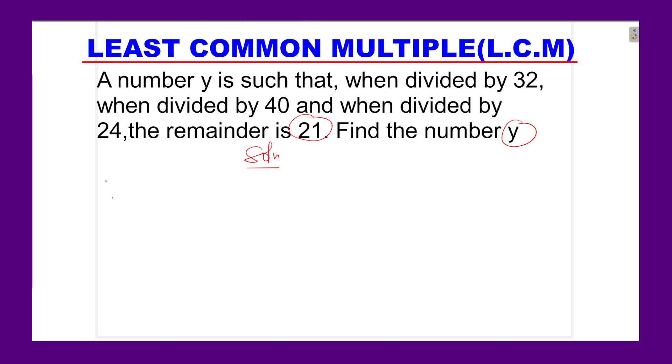Now this is how we are going to get that number y. We shall get it by obtaining the least common multiple of 32, 40, and 24. Once we get the least common multiple of those numbers, we add 21. So we get the LCM of 32, 40, 24. When we get that answer, we add 21. That is how we are going to find that number y.